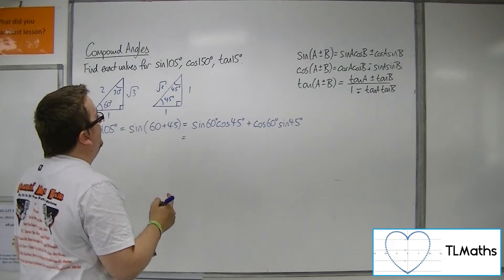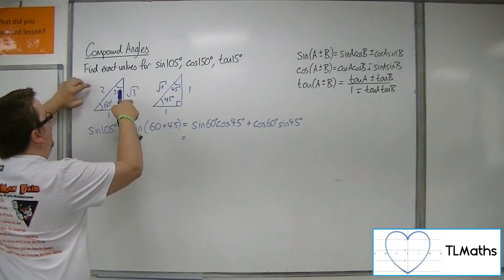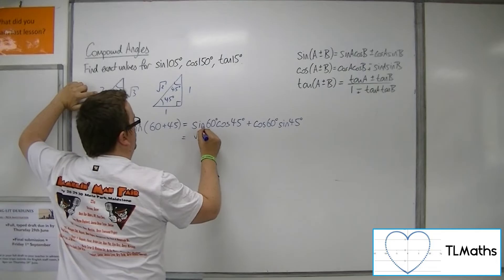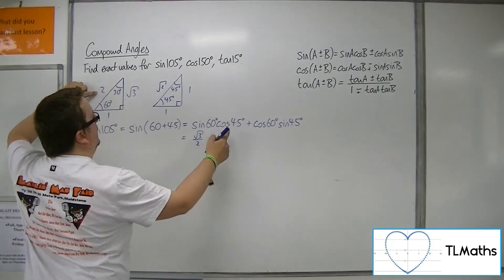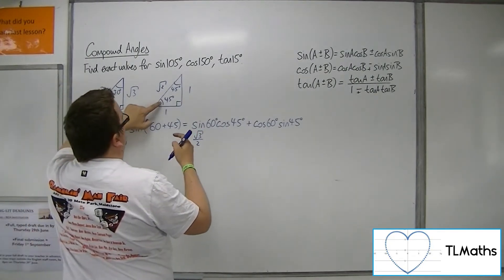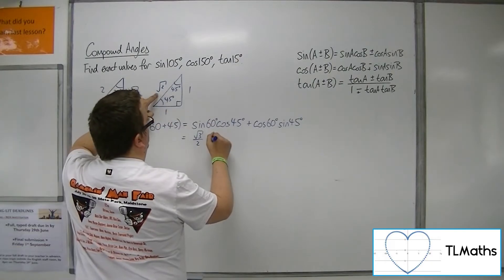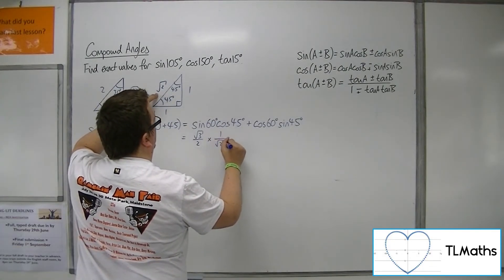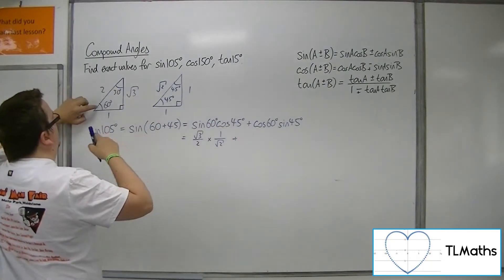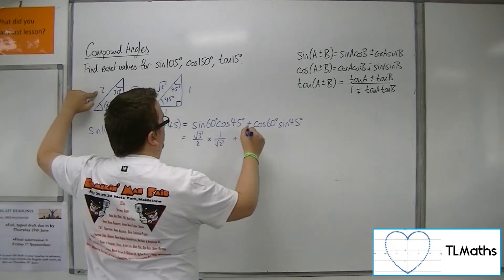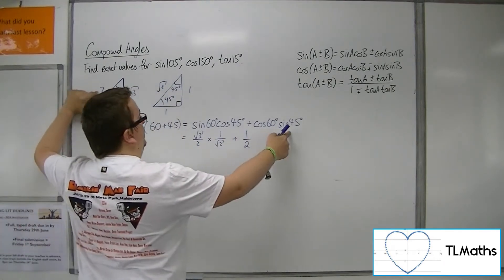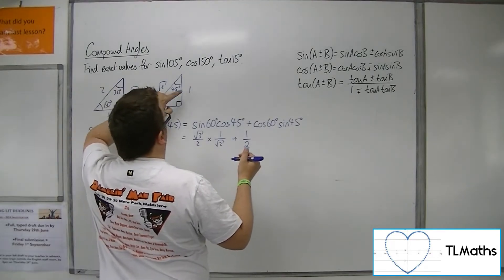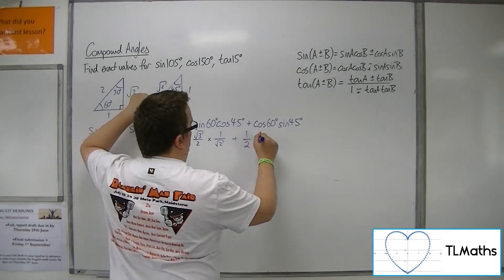Sine of 60 is opposite over hypotenuse, so root 3 over 2. Cos of 45 degrees is adjacent over hypotenuse, so 1 over root 2. Cos of 60 is adjacent over hypotenuse, so 1 over 2, and sine of 45 is 1 over root 2.